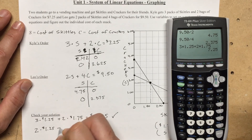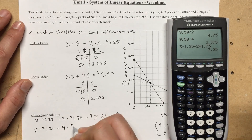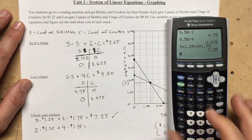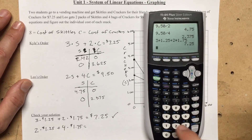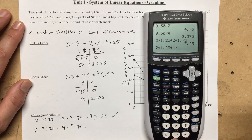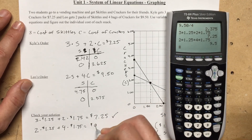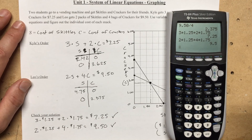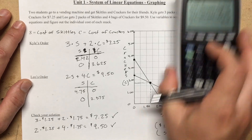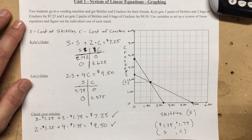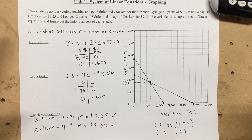Let's check Leo's order: two bags of skittles at 1.25 plus four bags of crackers at 1.75. Two times 1.25 plus four times 1.75 equals nine dollars and fifty cents — exactly what he paid. So that is the way to mathematically check your solution. We confirmed that the intersection point on Desmos was correct. That's your solution — and I'm going to go eat some skittles. Goodbye!